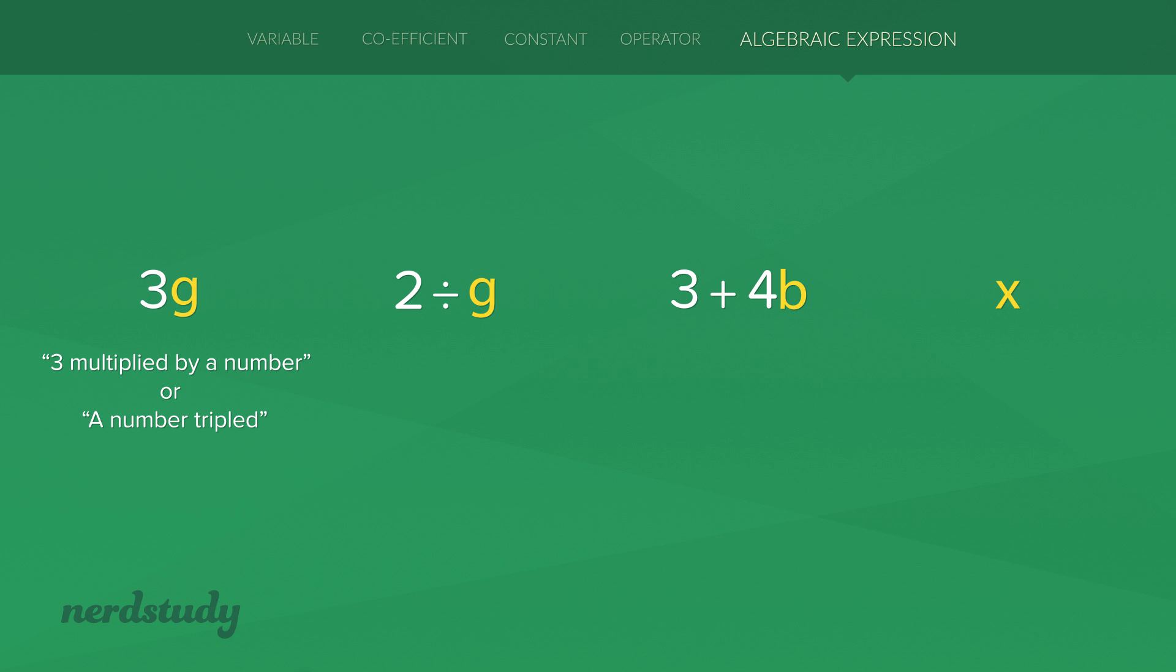And for the second one, 2 divided by a number. For the third one, we can say 3 more than the quadruple of a number. And lastly, this one is the easiest to express in English. It would just be a number or an unknown number.